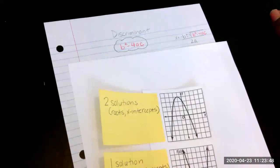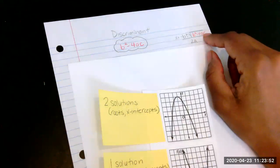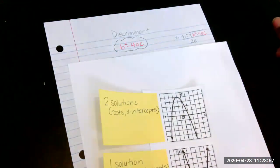If you remember from the last video, we learned how to use the quadratic formula, and that b squared minus 4ac is the part of the quadratic formula that is underneath the radical sign.